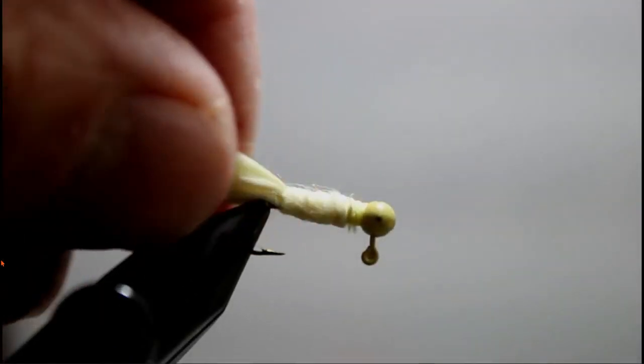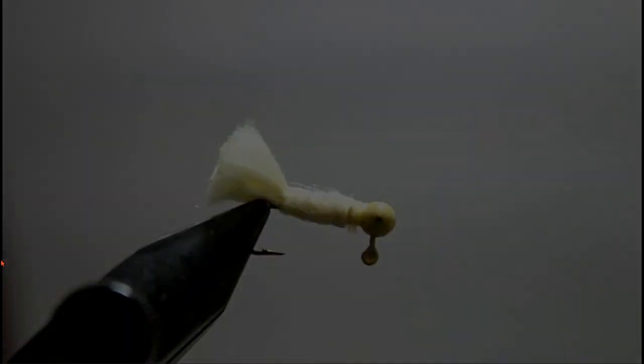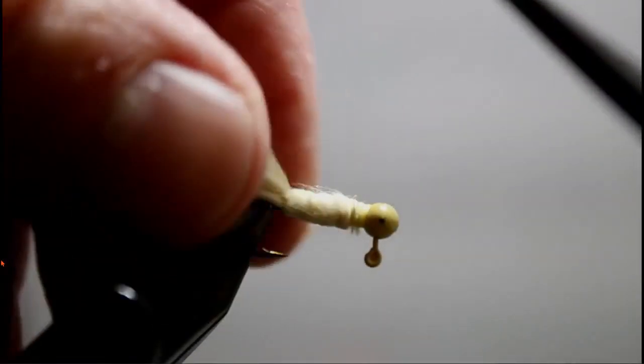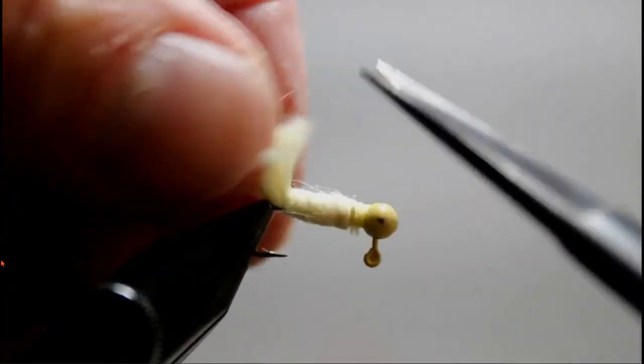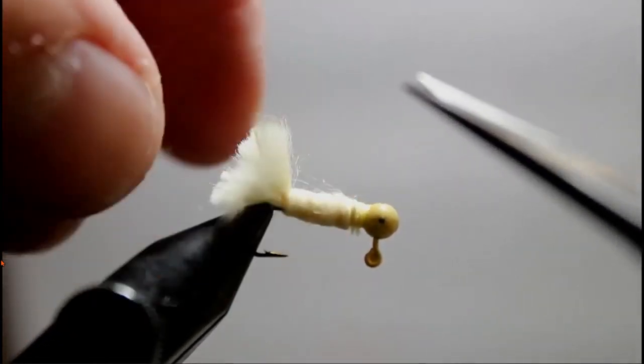Now take a pair of scissors and trim off the tail to about a half a hook shank in length. Now take your time to single out and trim off the little strands that remain in the tail. And to Terry, this is a make or break deal here.